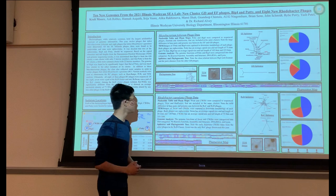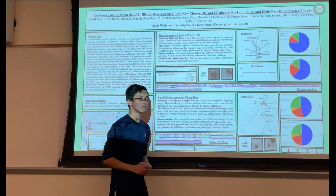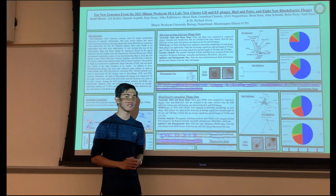From the TEM analysis, we found that RCC phages are much smaller than the RCD phages. Both phages are siphoviridae. RC Swan has an average capsid size and tail length of 65.1 nanometers and 120.9 nanometers.